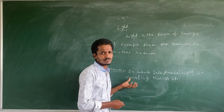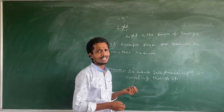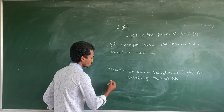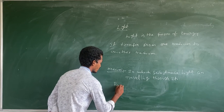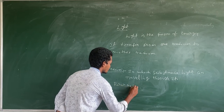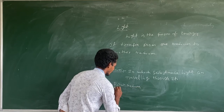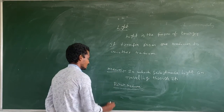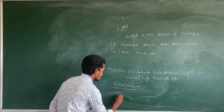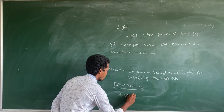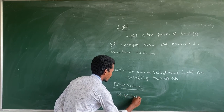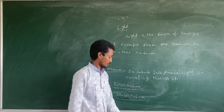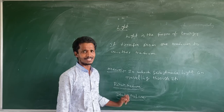How many types of mediums are there? Mainly two types of mediums are there. First one is rarer medium. Second one is denser medium.